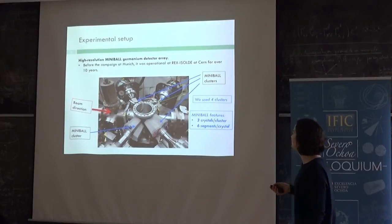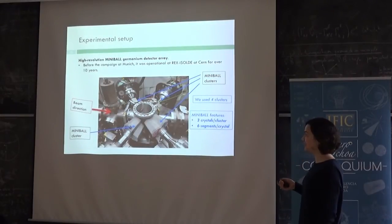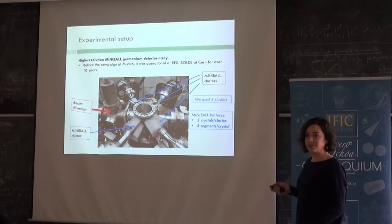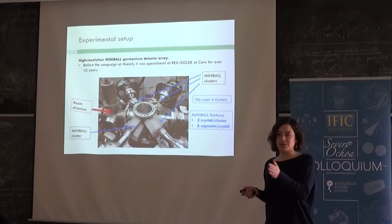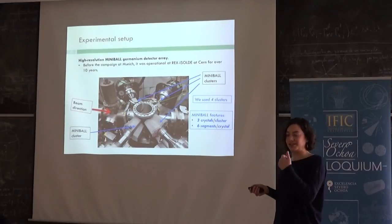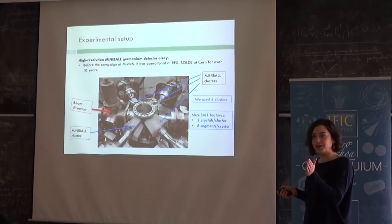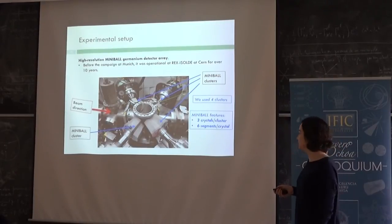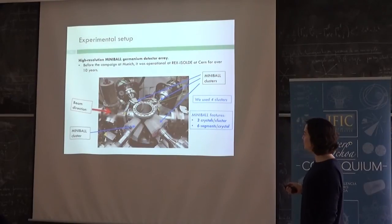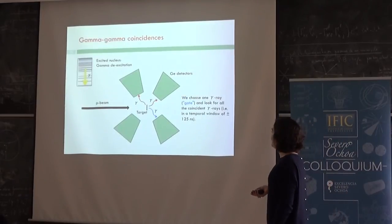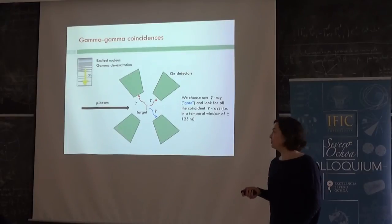So here I show a picture to show you how it looks like. So the miniballs are high-resolution germanium detectors. This would be a cluster of miniballs. So each cluster has three crystals and each crystal has six segments. So you have really detailed angular information because each segment can detect the gammas. And then you have a very well angle-resolved situation. So we use four miniball clusters and this would be the direction where the proton comes.